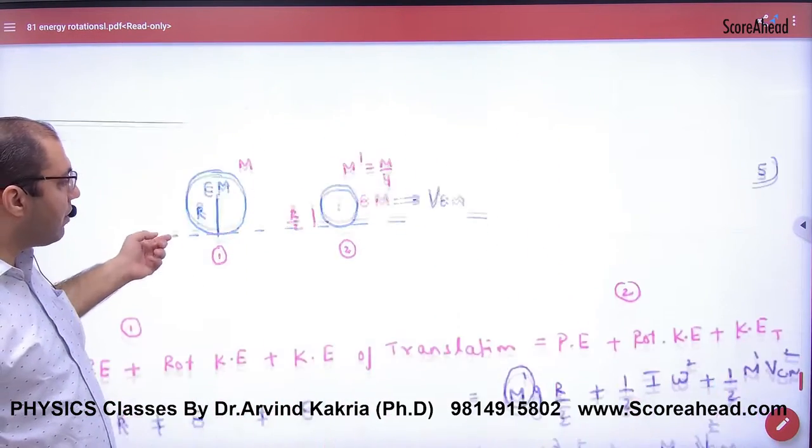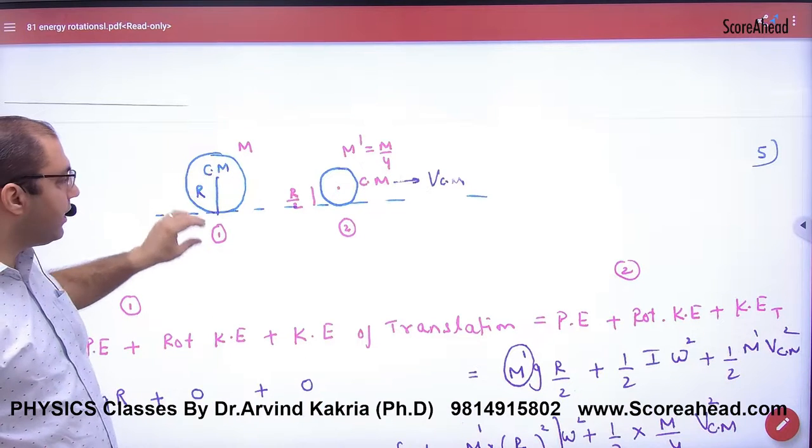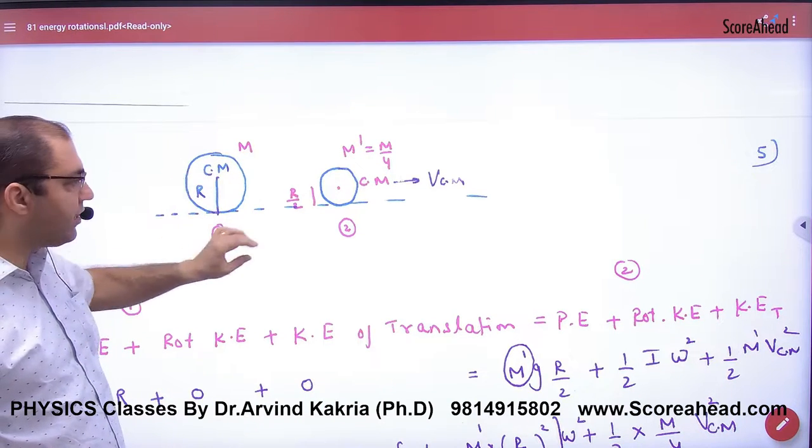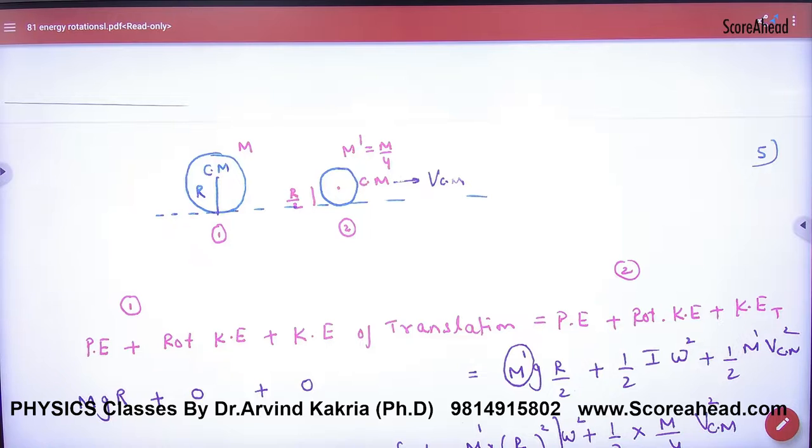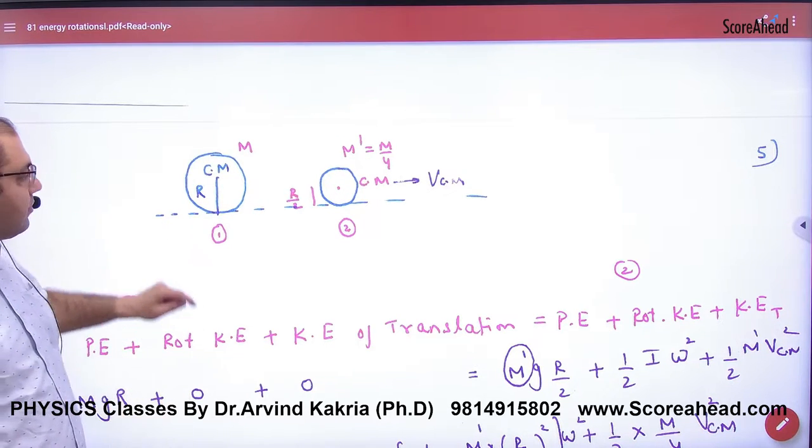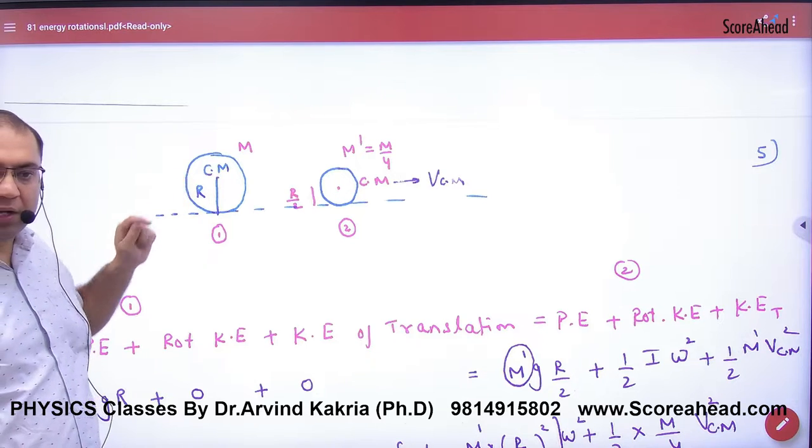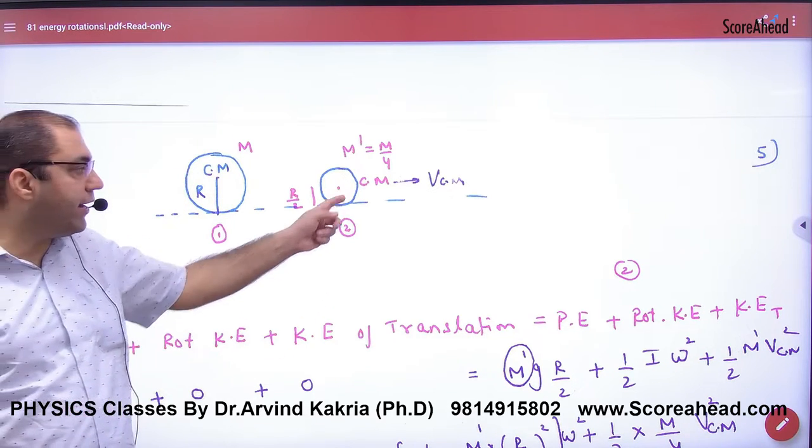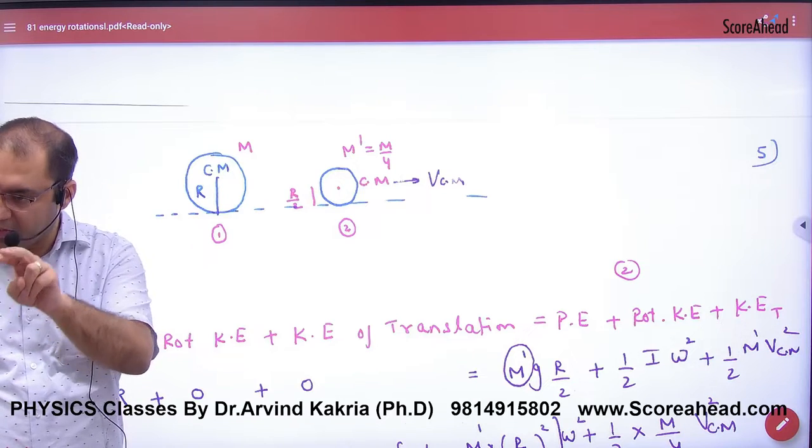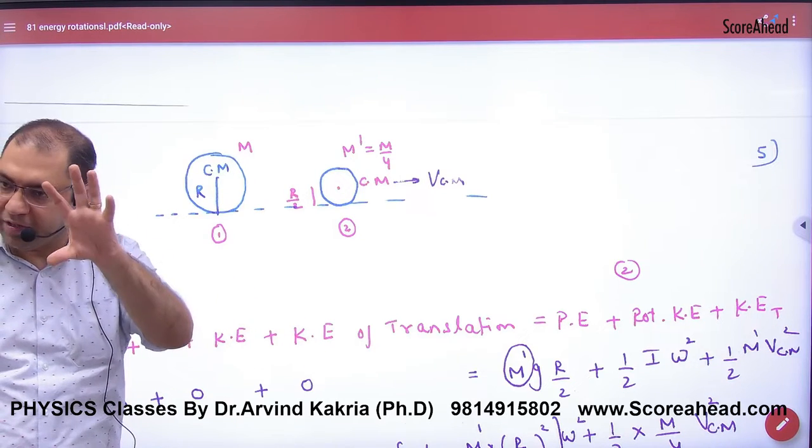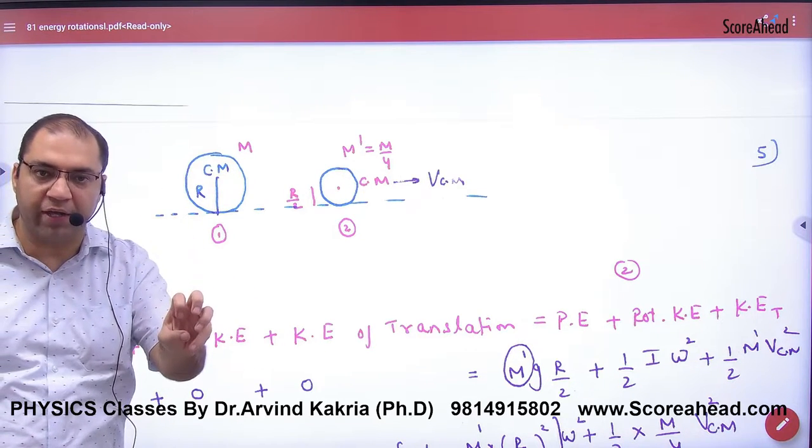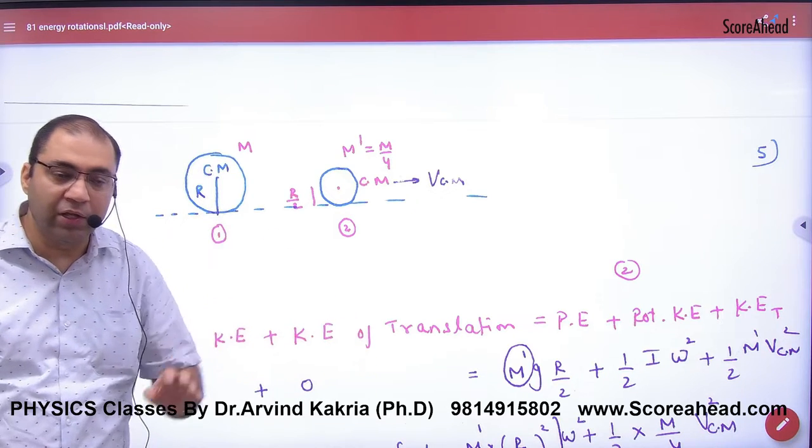Now the concept is that when this cylinder was like this, its radius was R, and a little later the radius is R by 2. Where will the mass be? Mass will be at the center of mass. Where is the center of mass? At a height of R. Then where is the center of mass? At a height of R by 2. So the center of mass is down because the radius is small and small, the carpet is small.